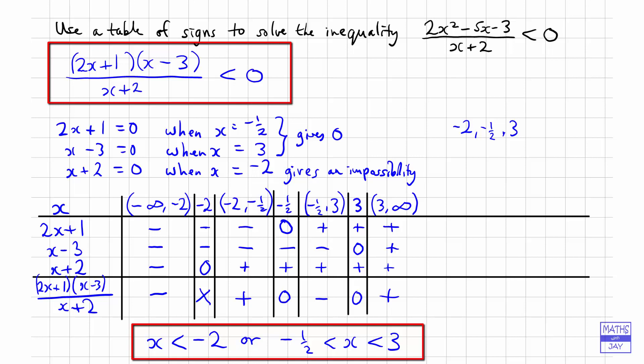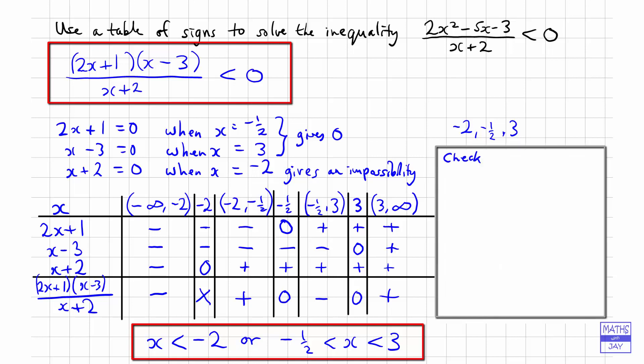And of course, you'll want to check your answers. So the first part of the answer had that x was less than minus 2. So we can choose any value less than minus 2 and see if that works. So let's try minus 3. So when x equals minus 3, our fraction is 2 times negative 3 plus 1. So that's minus 5 times minus 3 subtract 3. So that's negative 6. And then the denominator, x plus 2, gives us negative 3 plus 2. So minus 1. So that comes out to be negative 30, which is definitely less than 0. So that's fine.